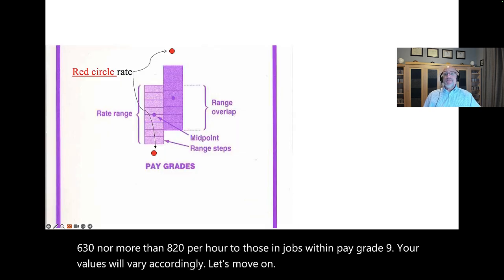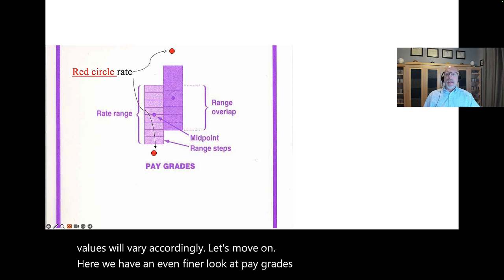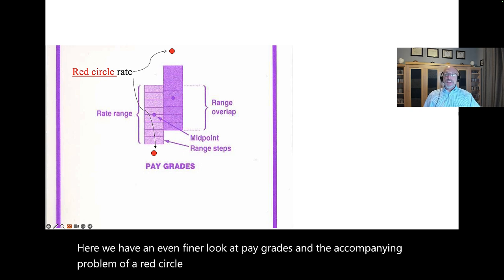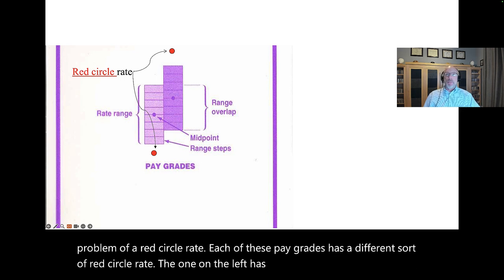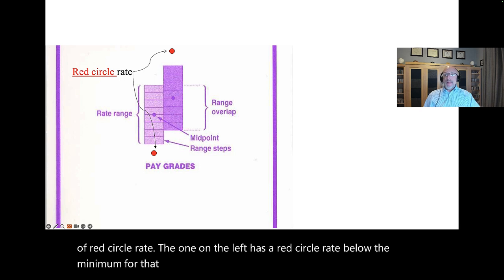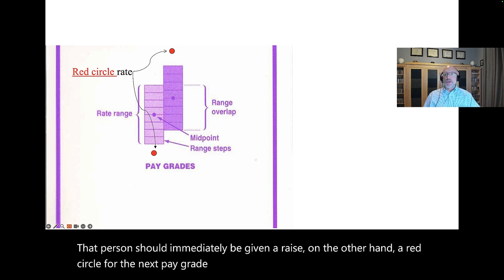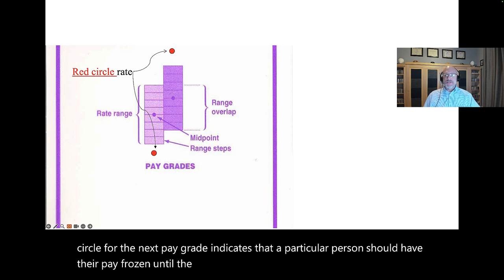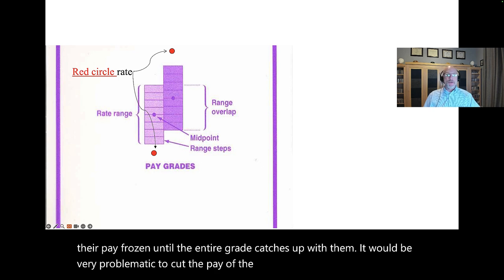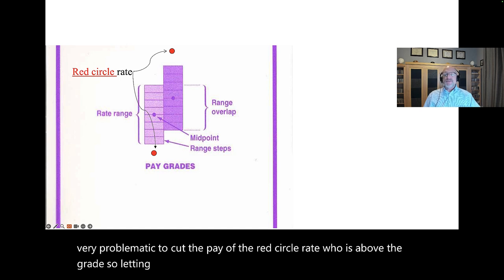Here we have a more fine-grained examination of pay grades and the accompanying problem of a red circle rate. Each pay grade can have a different sort of red circle situation. One on the left has a red circle rate below the minimum for that grade — that person should immediately be given a raise. On the other hand, a red circle above the grade maximum means that person's pay should be frozen until the entire grade catches up with them. It would be very problematic to cut that person's pay, so letting others catch up is the likely move by the firm.